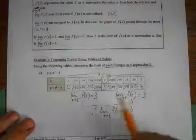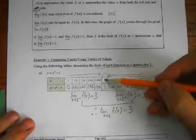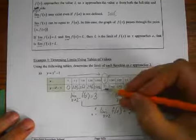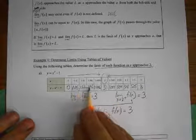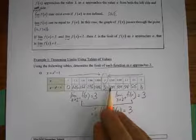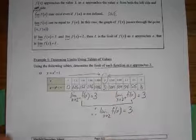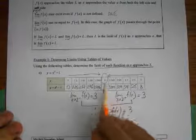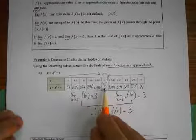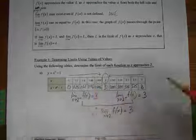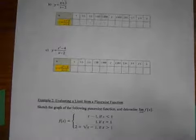Just to make the point clear: if for some reason the value of this function at x equals two happened to be something other than three — say it was 20 — that wouldn't change what these limits are, because you can see it's approaching three from both sides. The limit would still exist and it would be three. The actual value at x equals a really doesn't play into what the limit is.